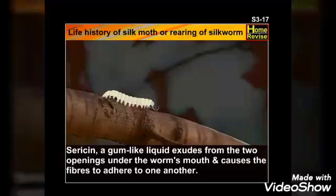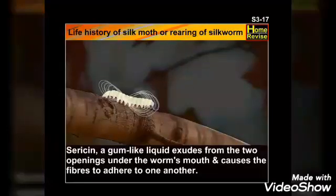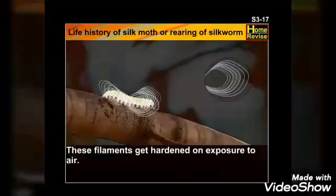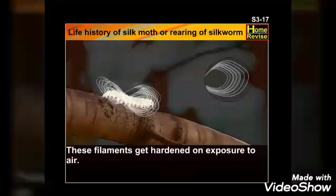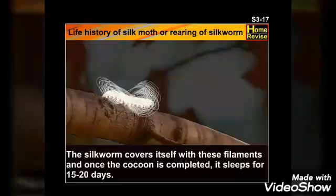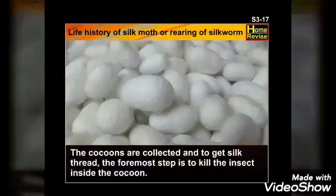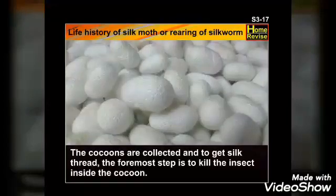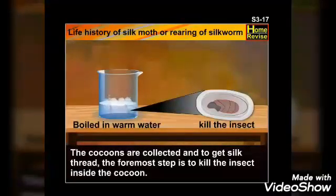Sericin, a gum-like liquid, exudes from two openings under the worm's mouth and causes the fibers to adhere to one another. These filaments get hardened on exposure to air. The silkworm covers itself with these filaments, and once the cocoon is completed it sleeps for 15 to 20 days. The cocoons are then collected and the first step is to kill the insect inside the cocoon to get silk thread.